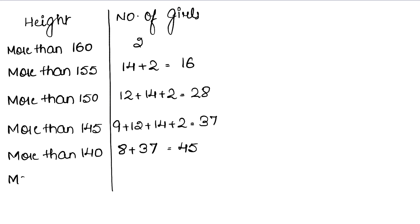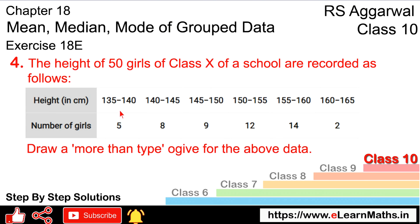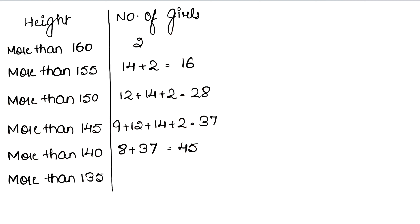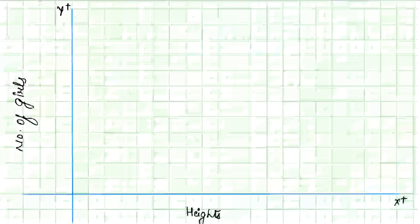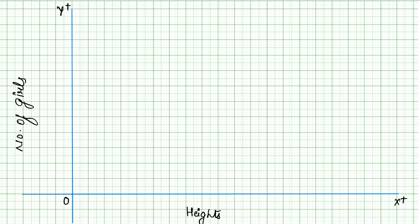Now more than 135: we add 5 to the already calculated 45. So 5 plus 45 equals 50, which is the total number of girls. This completes our more than type cumulative frequency table.